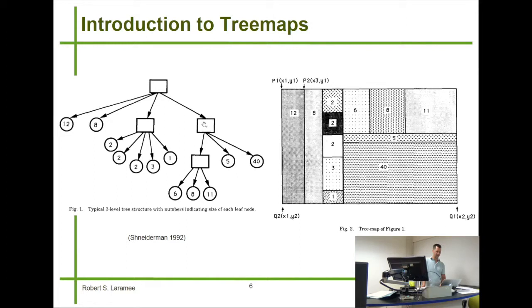Here we have another internal node. It is mapped to this rectangle here. And it is subdivided. It's subdivided into another rectangle, which is here. So, they're really nested rectangles. Does everybody see that? They're nested rectangles. That rectangle is subdivided into three leaf nodes, six, eight, and eleven. Here's a leaf node that's mapped to this rectangle of five. And then the last one, which is mapped to a rectangle of size 40. So, the traditional tree structure is mapped to a set of nested rectangles in the treemap.